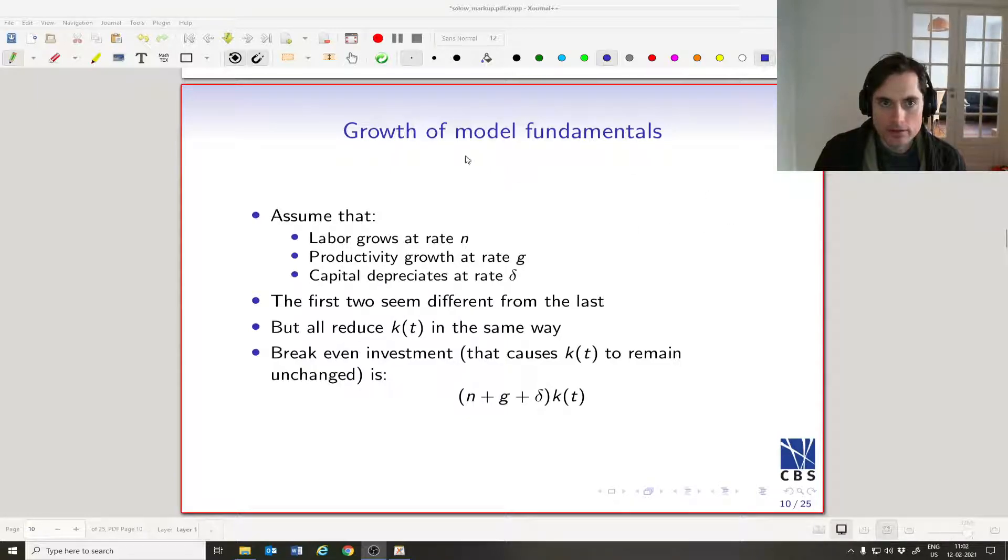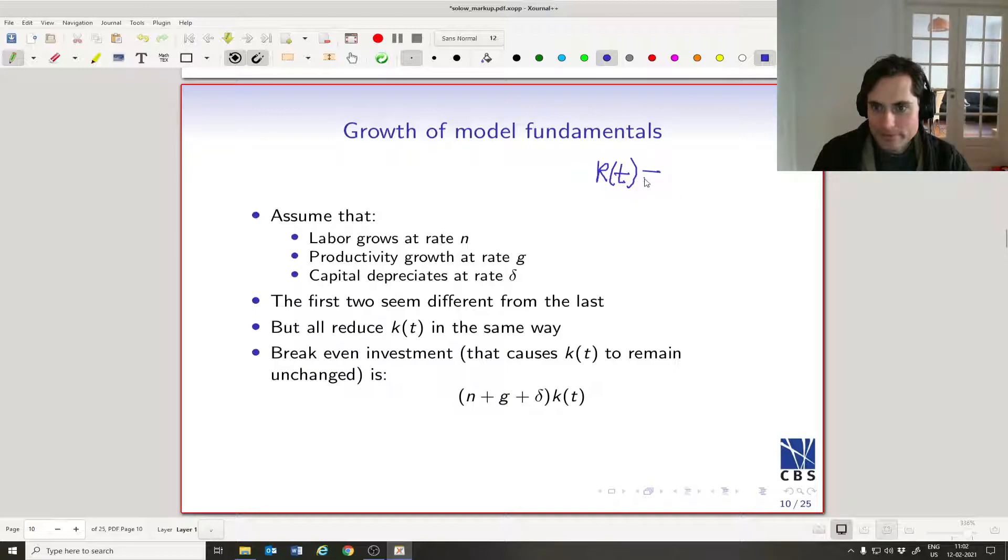So let me give you the intuition here. Okay, the intuition is that, recall that little k_t is equal to big K(t) divided by A(t) times L(t).